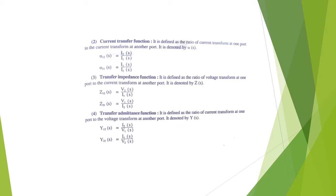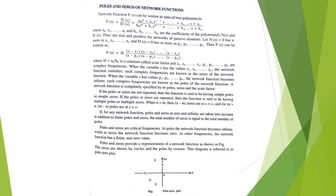As far as poles and zeros of network functions are concerned, F(s) has numerator polynomial N(s) and denominator polynomial D(s). The coefficients a0 to an are for N(s) and b1 to bm are for D(s). After factorizing the numerator and denominator and finding the roots, we write F(s) = h · (s − z1)···(s − zn) / (s − p1)···(s − pm), where h is a constant called the scale factor.